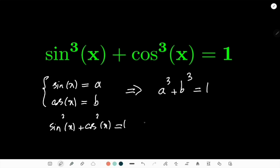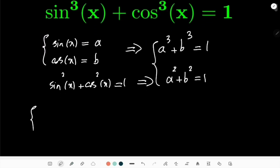And that gives me a² + b² = 1. So can I solve this system of equations? Yes, the answer is yes. So I have a³ + b³ = 1 and a² + b² = 1. So how to solve this problem?